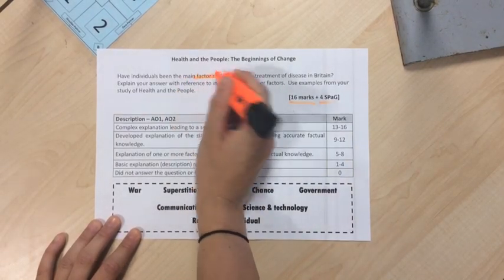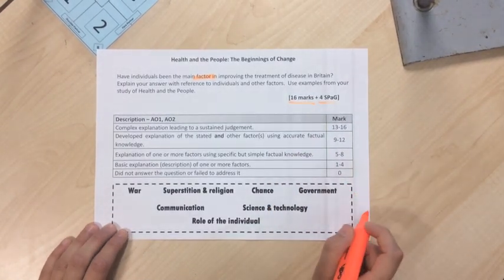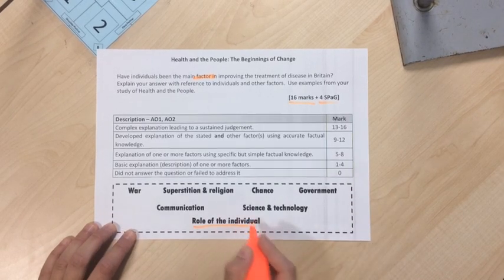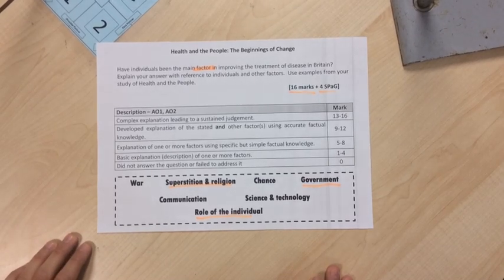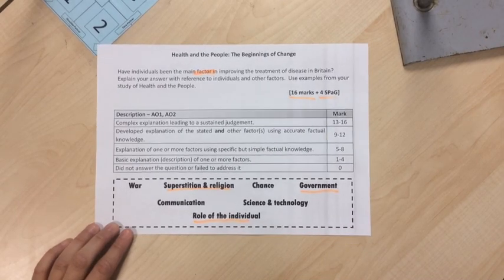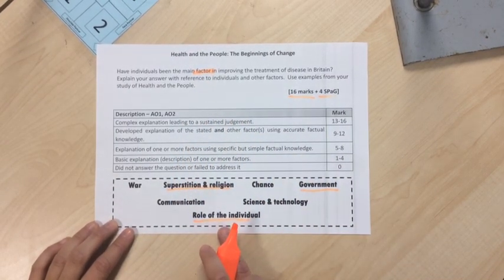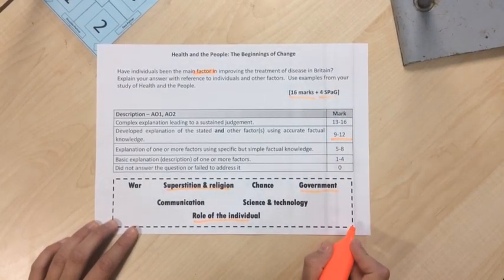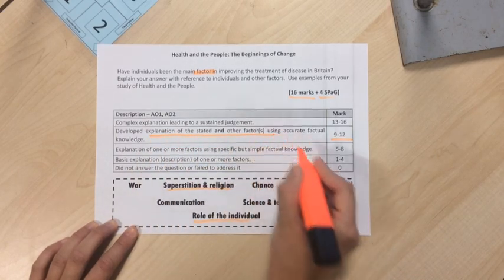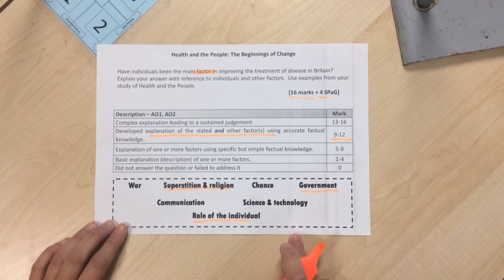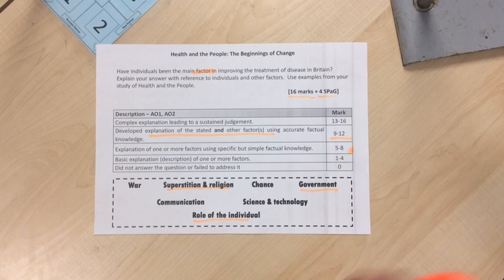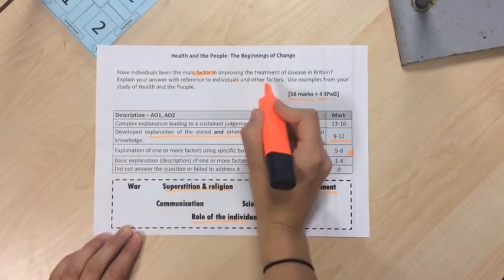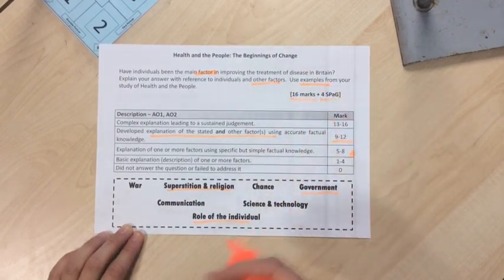When it says the word 'factor,' what it's asking you to look at is the different factors we've studied throughout this topic. For this video I'm going to be looking at the role of the individual, government, and superstition and religion. If you have a look at the mark scheme, you'll see that the factor stated in the question doesn't necessarily have to be discussed until the 9 to 12 marks out of 16 band, because it says 'developed explanation of the stated and other factors.' You can go into the exam with a rough plan, knowing you can already achieve 8 marks out of 16 if you fully explain and link back to the question. You need to use examples from your study of the Health and the People topic.